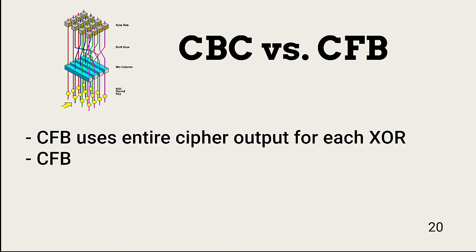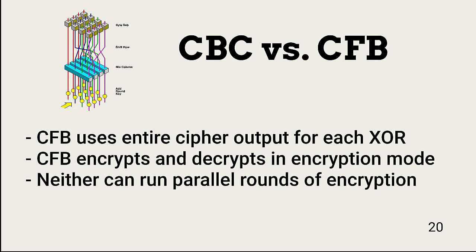The cipher feedback mode, CFB, is almost identical to CBC. The difference lies in what is XORed in each round: CBC only XORs the output of each round, while CFB XORs all output from all previous rounds combined. This prevents one of the challenges in CBC — the propagation of errors. Another advantage of CFB is its ability to encrypt and decrypt in the same mode, while CBC must use both an encrypt and a decrypt mode, which can make CFB easier to implement.